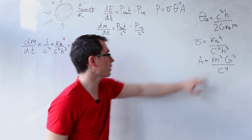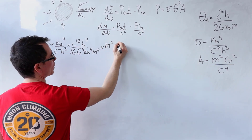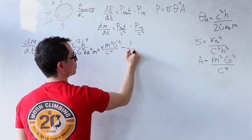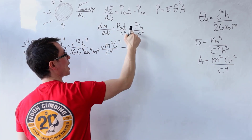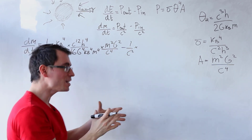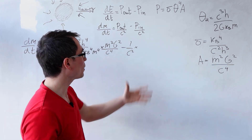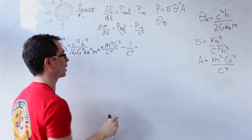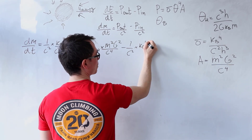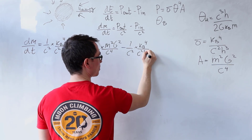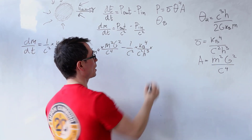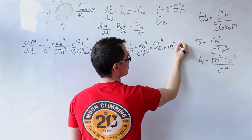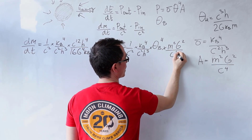We multiply this by the area, which is M² G² divided by c to the power 4. Then we take away the rest: 1 over c² times the total power going into the black hole due to the cosmic microwave background. The question gives us that the cosmic temperature of space is θ_B (theta background), so this equals Stefan's constant — k_B to the power 4 divided by c² h³ — multiplied by temperature to the power 4 and then by the area M² G² divided by c to the power 4.